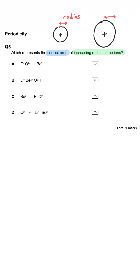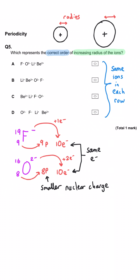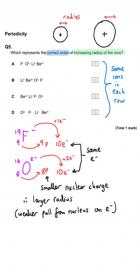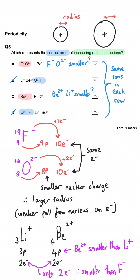Which of these is the correct order for the increasing radius of the ions? Fluoride has nine protons and ten electrons whereas oxide has eight protons and ten electrons, so oxide is bigger than fluoride due to its smaller nuclear charge. B and D must be wrong because they show oxide as smaller than fluoride. Out of A and C, lithium and beryllium ions only have two electrons each, so they will be much smaller than the oxide and fluoride ions. That means A is wrong and C must be correct.